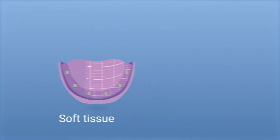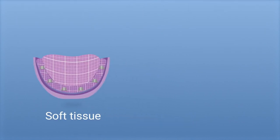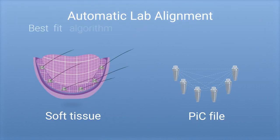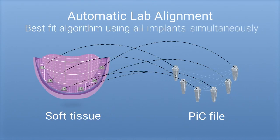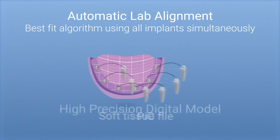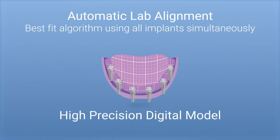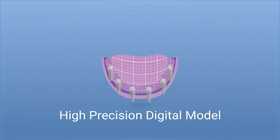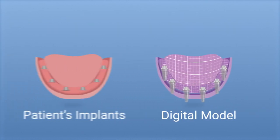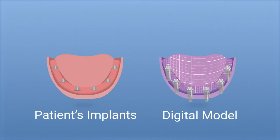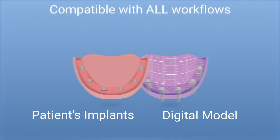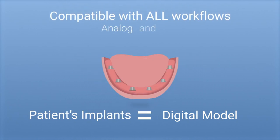Soft tissue registration must be taken with an alginate impression or an intraoral scanner. At the lab, the PIC file and soft tissue data are easily aligned, becoming a high precision digital model identical to the patient's mouth. Now you are ready to continue your digital or conventional workflow.